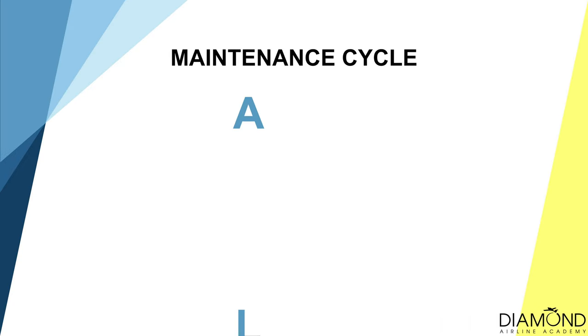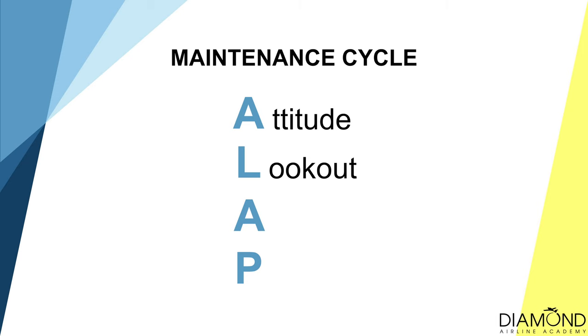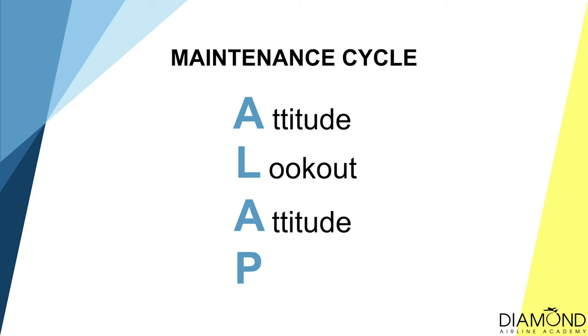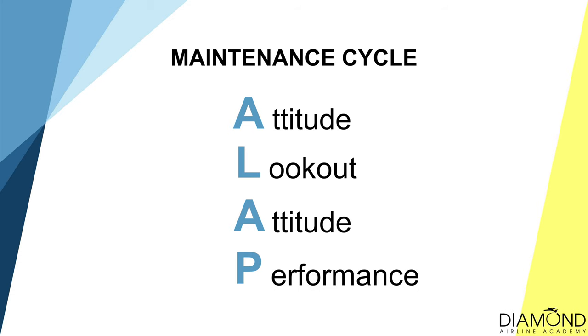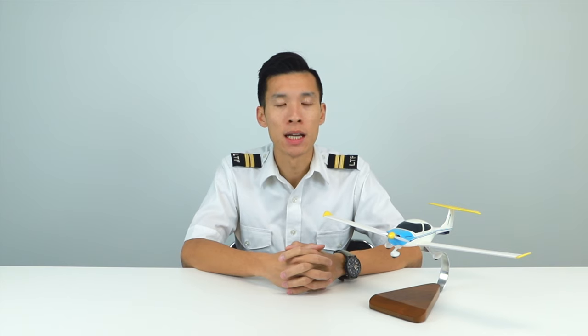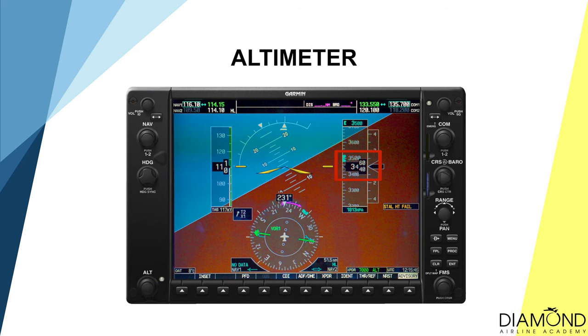The maintenance work cycle is A, L, A, P — Attitude, Lookout, Attitude, Performance. Maintain the attitude of the aircraft, keep looking out into the direction of the turn, and continue maintaining attitude. In the performance scan, we look at our heading to see when to stop turning, and keep an eye on the altimeter to see when to start levelling off. This depends on whether we reach the heading or the altitude first.